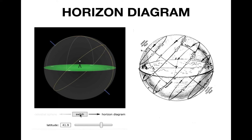For both of these diagrams, straight up is in this direction, and that point directly overhead is sometimes referred to as the zenith. There's another point directly below the observer's feet referred to as the nadir. That one doesn't come up as often, but it's a cool vocabulary word to know.